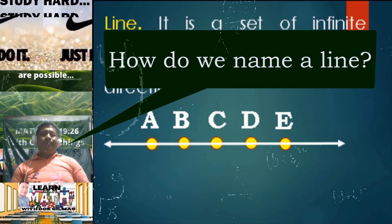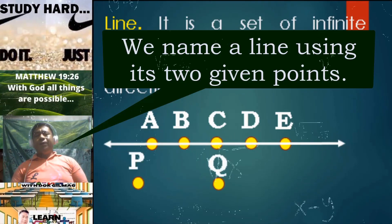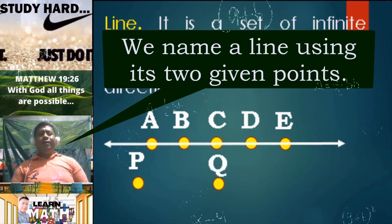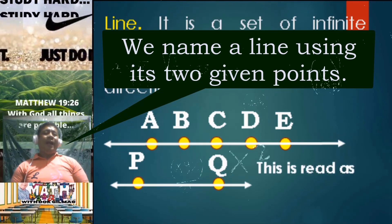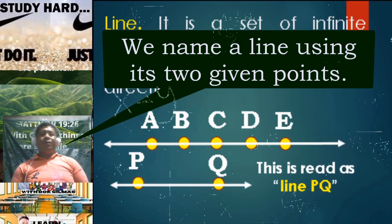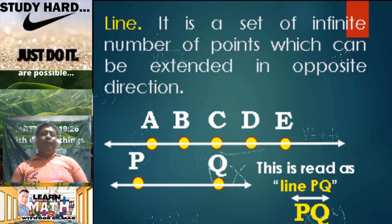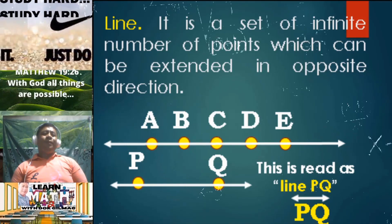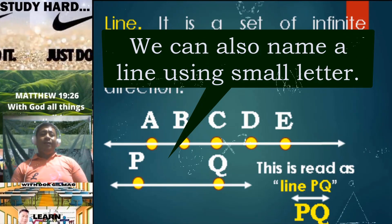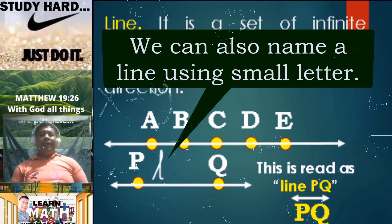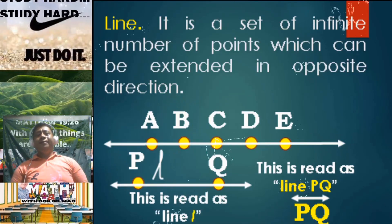How do we name a line? Consider two given points here, point P and point Q. If we're going to connect these two points, we form a line. We can simply name this as line PQ. This is the symbol for the line, so we have line PQ. We can also name a line using small letters — consider letter L here. We can simply name this line as line L.